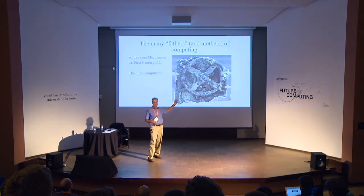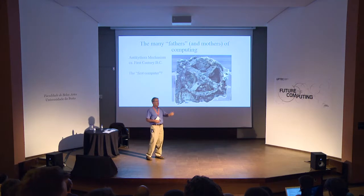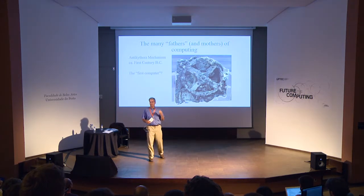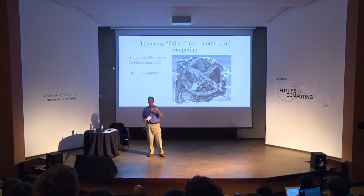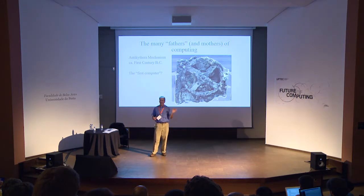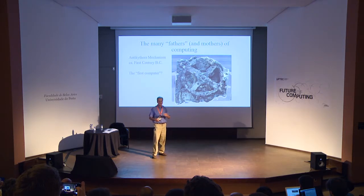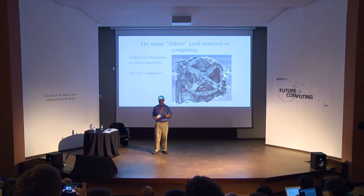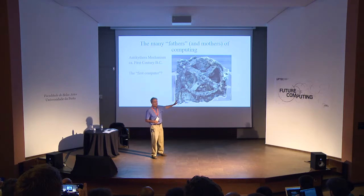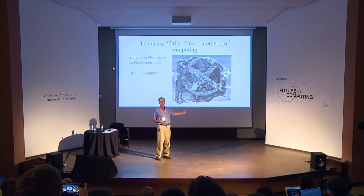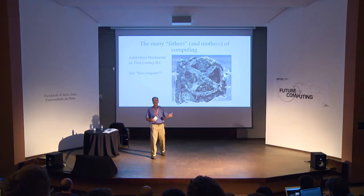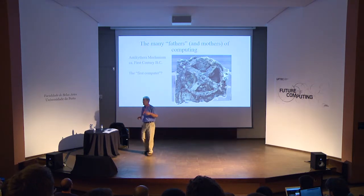It was X-rayed in the 1970s and recently much more sophisticated tests were done on it. It's very clear it was an astronomical calculator that could predict the heavens — staggering complexity of mechanical engineering that seems to have vanished until the late Middle Ages, the industrial revolution. People are still baffled about how the Greeks had this kind of technology.